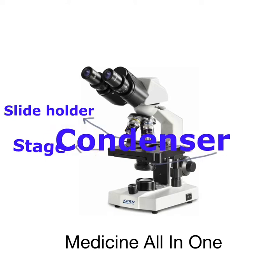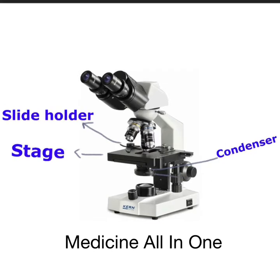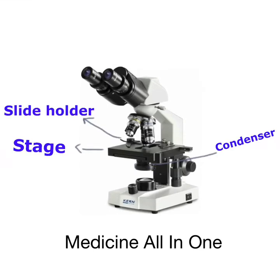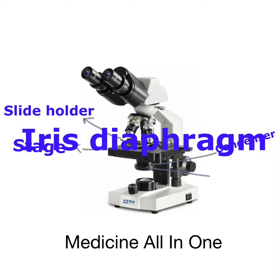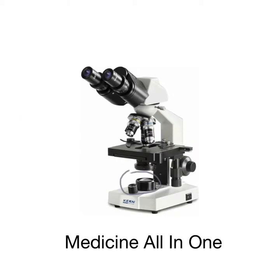Below the stage there is a condenser. The condenser basically focuses the light from the light source onto the slide. In an unstained slide it is adjusted at the lower position, whereas in a stained slide it is adjusted at the higher position, that is one to two millimeters below the slide. On the condenser there is a small lever known as the iris diaphragm lever, which controls the amount of light that passes through the condenser. Directly below the condenser there is the light source.